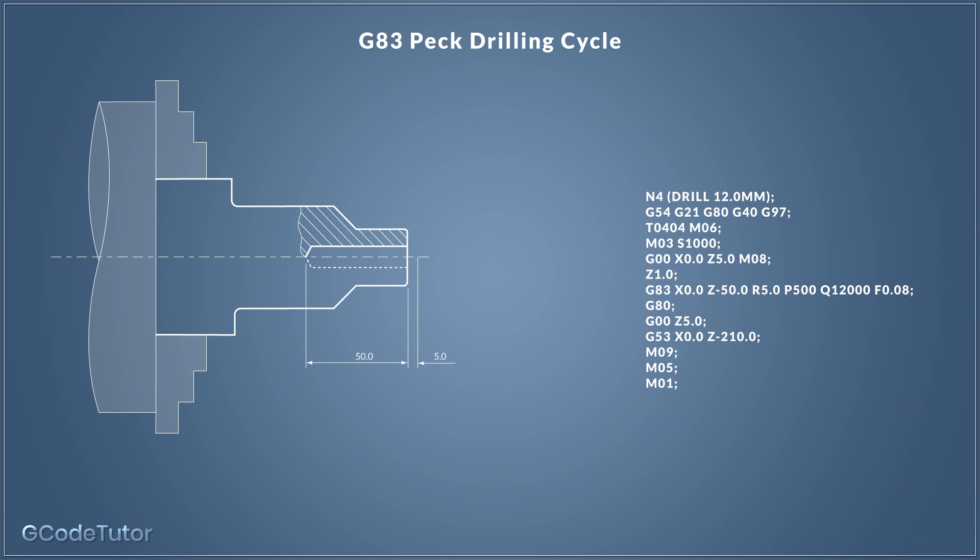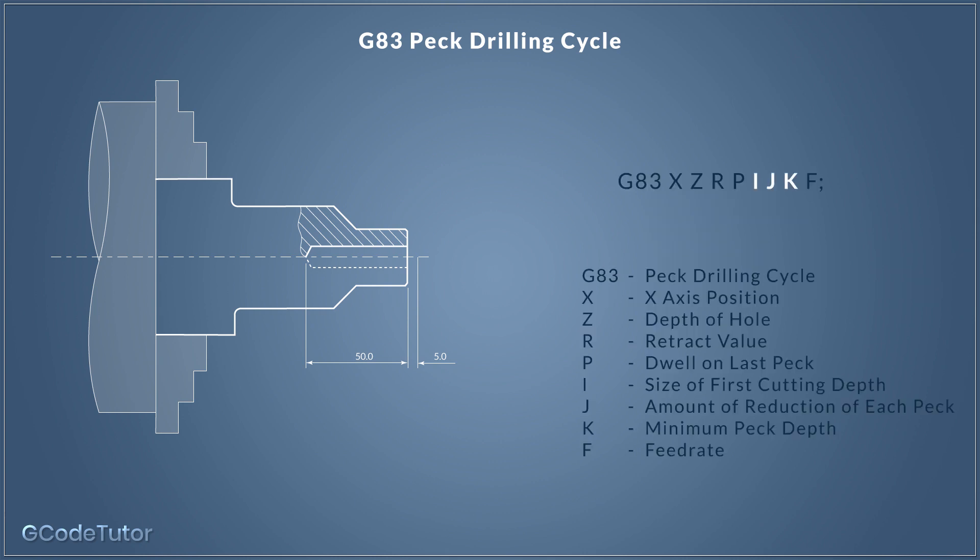The G83 peck cycle is the one you're most likely to see in most programs on CNC lathes. But we can add a few features to give us more control over it on some machine systems. We can add I, J, and K values to this line of code for additional control. By using I, we can define the size of the first depth of cut — the very first peck. Sometimes when centerline drilling, we'd want to take a deeper first peck. This speeds up the operation because we're going in harder and deeper on the first peck. When the drill starts to get too hot and swarf builds up, we can retract and reduce the amount of material per peck. So the I value is the depth of the first peck.